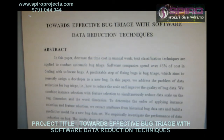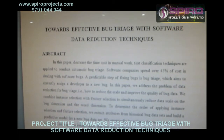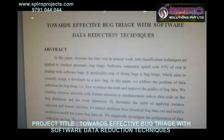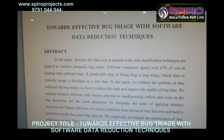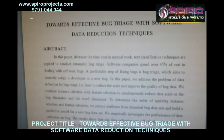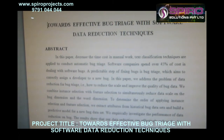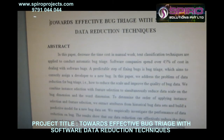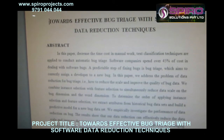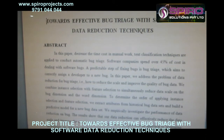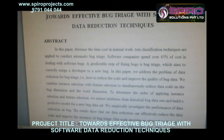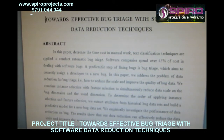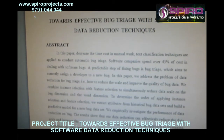The main objective of the project is to decrease the time cost in manual work as well as to effectively find out the errors. Text classification techniques are applied to conduct automatic bug triage.